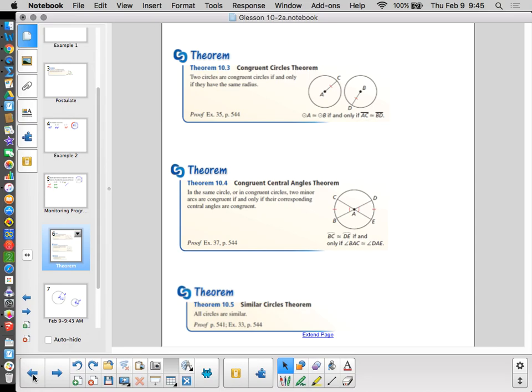And finally, similar circle theorem. Gosh, here's a shock. All circles are similar. So we want to know about congruent circles. They have to have the same radius. In order for circles to be similar, they have to be circles. Any two circles are similar automatically. There's no way to not be similar.